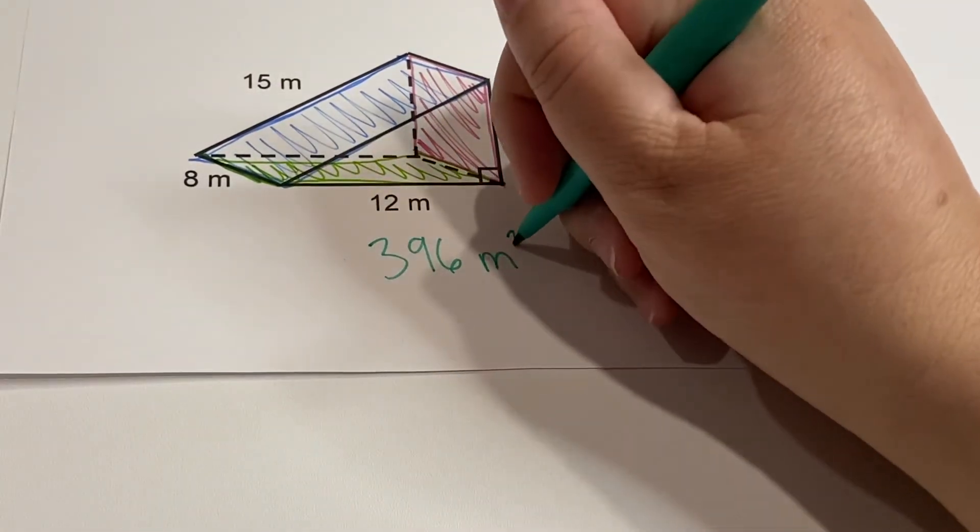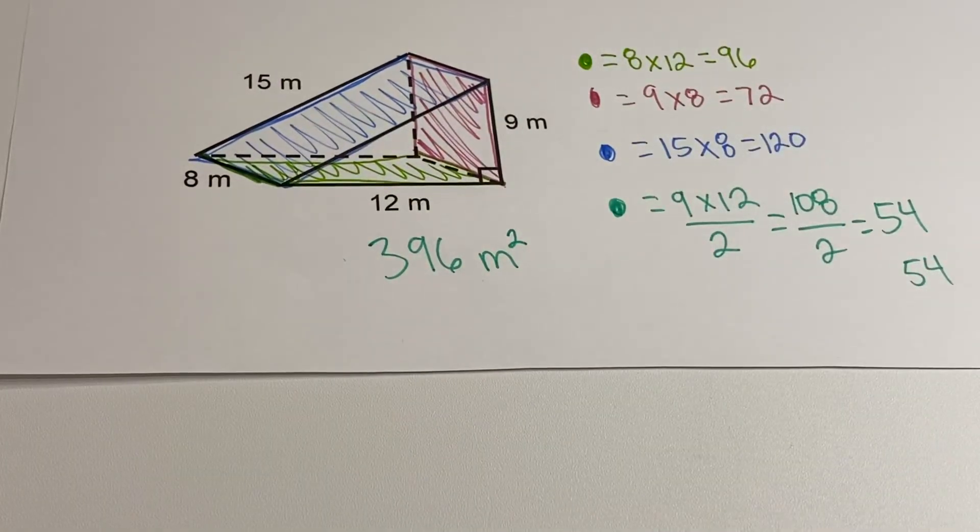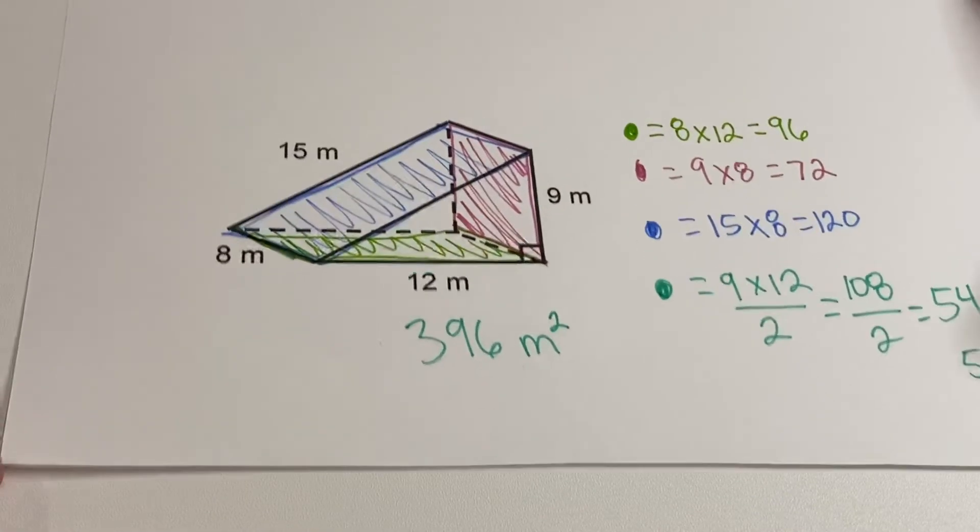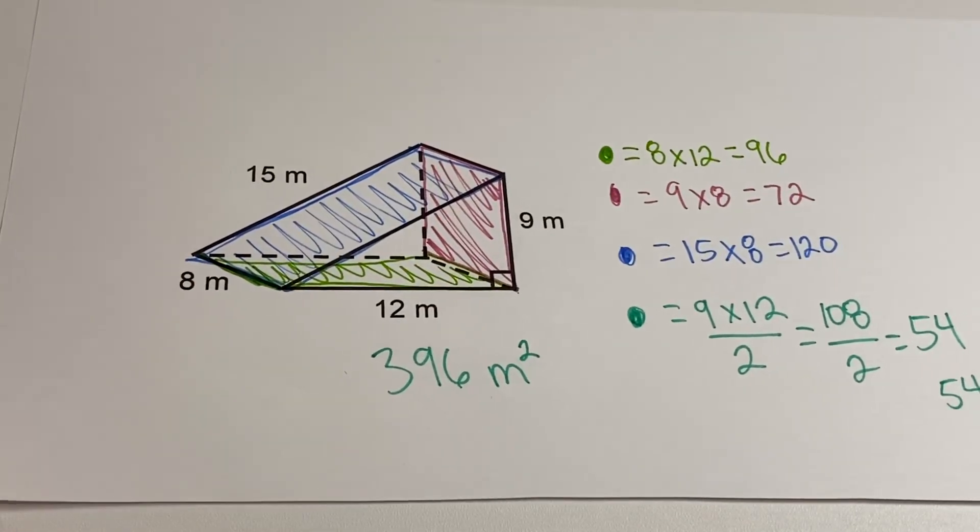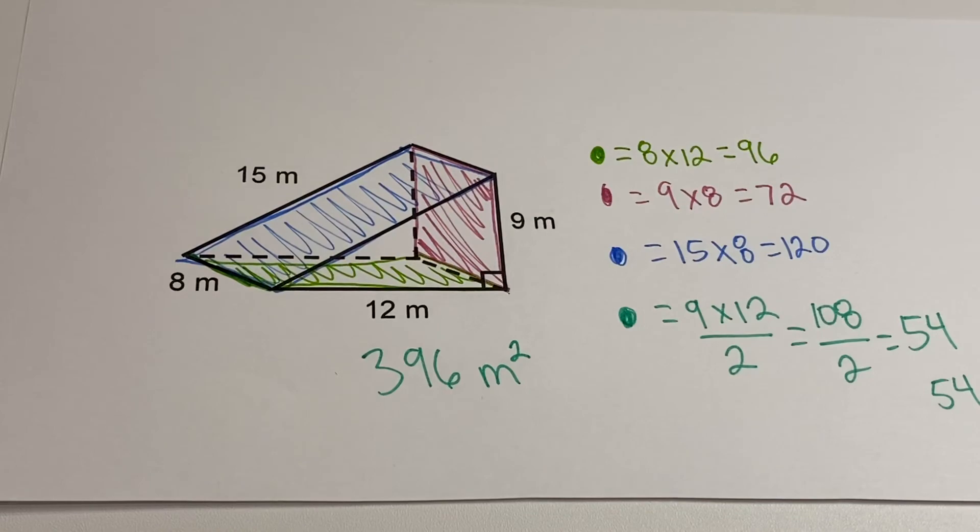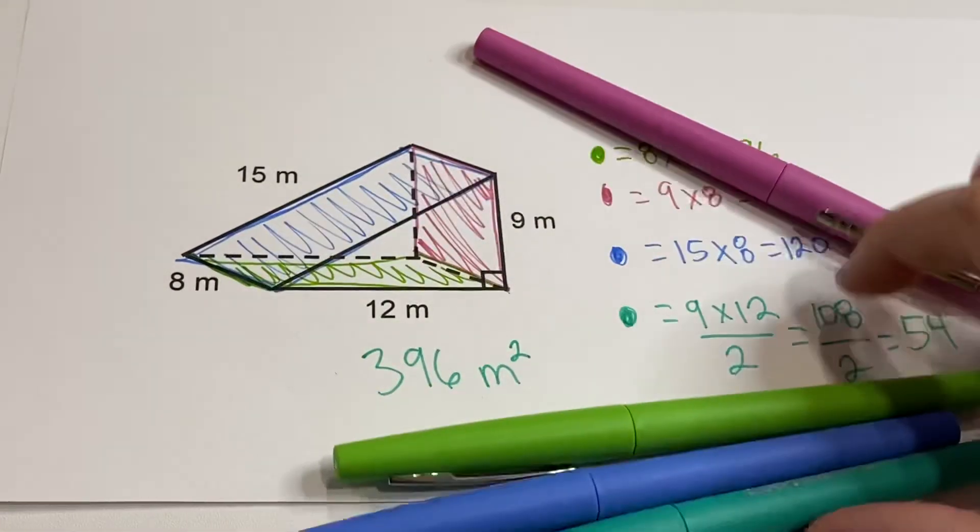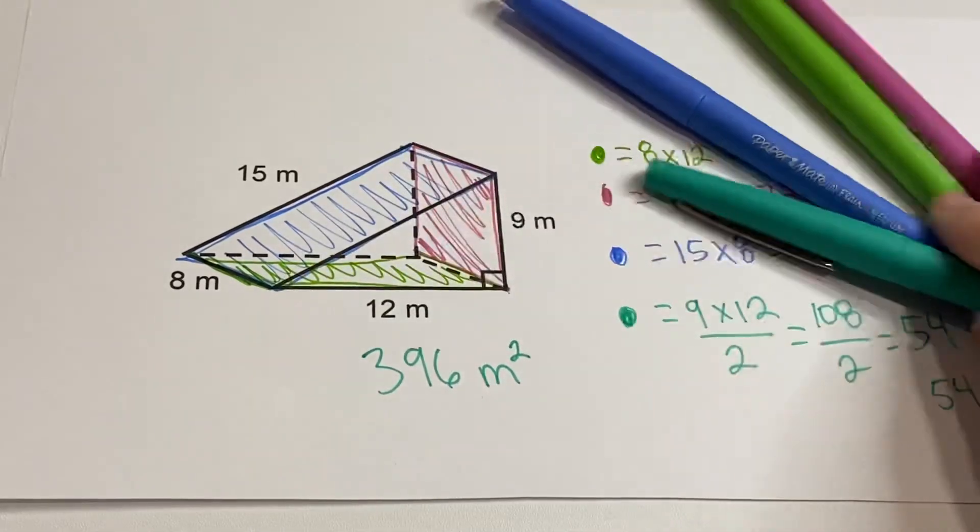So yeah, that is another way to find the surface area of a triangular prism, and I like it, especially if you get the chance to use all of those awesome flare pens. Right? Like, how fun is that, or whatever pens, crayons, colored pencils, markers, whatever you have.